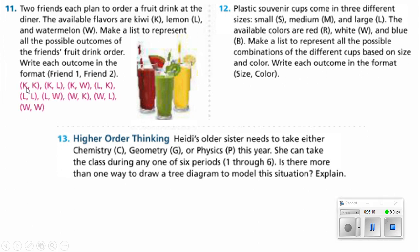Well, we could have kiwi and kiwi. Remember, there's two friends. They could both order a kiwi. One could order kiwi and one could order a lemon, or one could order kiwi and one could order a watermelon. Then we could say that the first one, maybe he ordered lemon, and the second one could order kiwi, lemon, or watermelon.